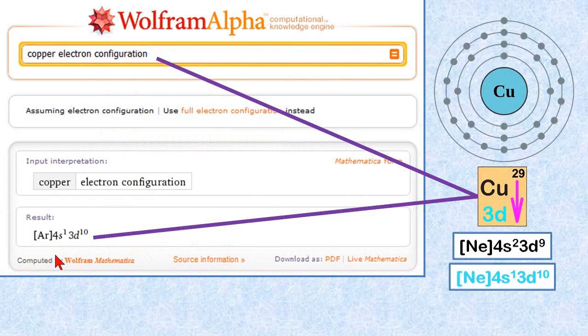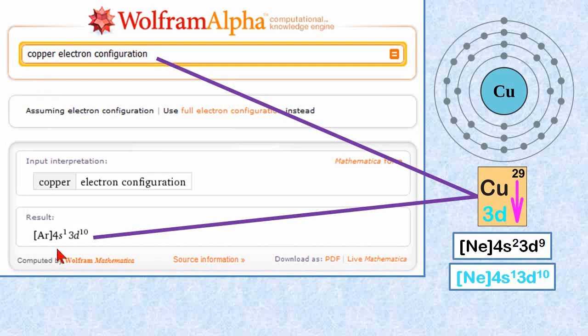For copper, you actually get a result if you go to Wolfram Alpha of a 4s1 3d10. That just means that instead of loading the electrons as Bohr's model predicts, it loads them in a different subshell of a higher energy level first, and places them a little bit out of order here. So that's what this blue represents. This is the actual configuration. This is what Bohr's model predicts. Of course, we're going to use this in class. That's just fine for class.